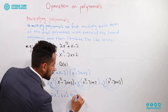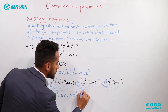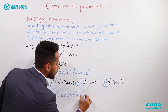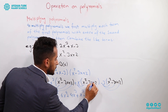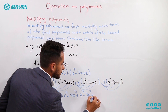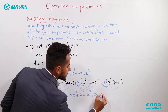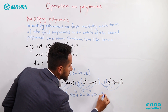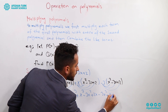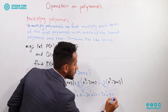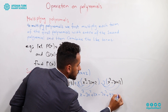Next, x times x² plus x times negative 3x plus x times 2 gives us x³ minus 3x² plus 2x. And negative 3 times x² minus 3x plus 2 gives us negative 3x² plus 9x minus 6.